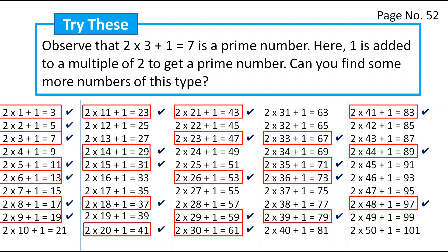Here we end today's video. In this video you learned how to find prime numbers up to 100. There are 25 prime numbers up to 100 — go through them and you will understand perfectly. I hope you have understood prime numbers and composite numbers. If you like my teaching, please like, share, and subscribe to my channel. Bye, everyone!